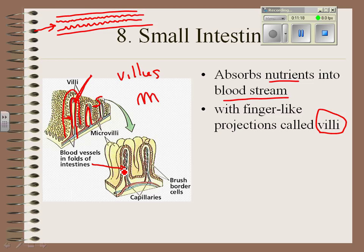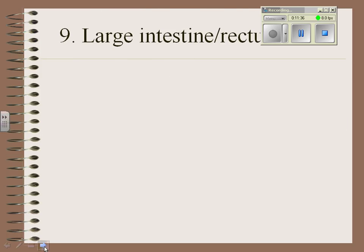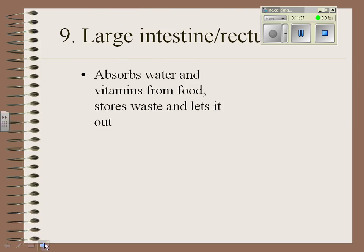Your small intestine is about 23 feet long. Over those 23 feet, it's squeezing food along through peristalsis, and as it does, nutrients are being absorbed. From there, it passes into your large intestine.